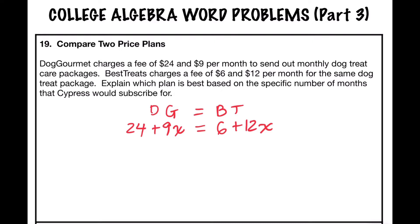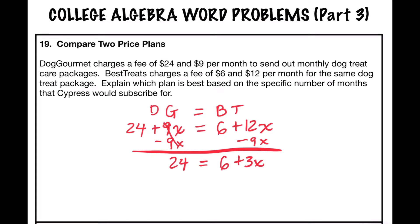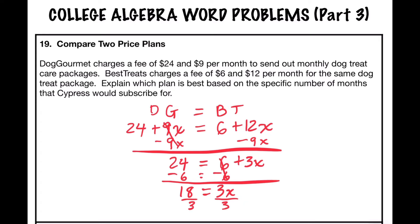Now we're going to solve this equation. I'm going to put all my variables on one side, subtracting 9x from both sides to keep my variable term positive. Positive 9x minus 9x cancels out, giving me 24. On the right-hand side, 12x minus 9x is 3x, so I have 6 plus 3x. Now I subtract 6 from both sides: 24 minus 6 is 18, giving me 18 equals 3x. Dividing both sides by 3, x equals 6.